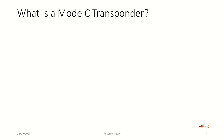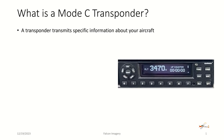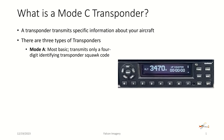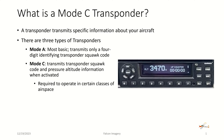A Mode C transponder is also required in your aircraft in various types of airspace. A transponder transmits specific information about your aircraft. There are three types of transponders. Mode A, the most basic transponder, transmits only a four-digit identifying squawk code. Mode C transmits transponder squawk code information and pressure altitude information when activated, and is required to operate in certain classes of airspace — this is the key minimum required today in many types of airspace.